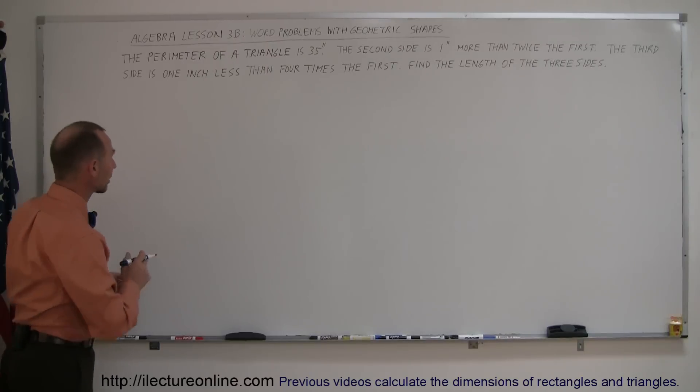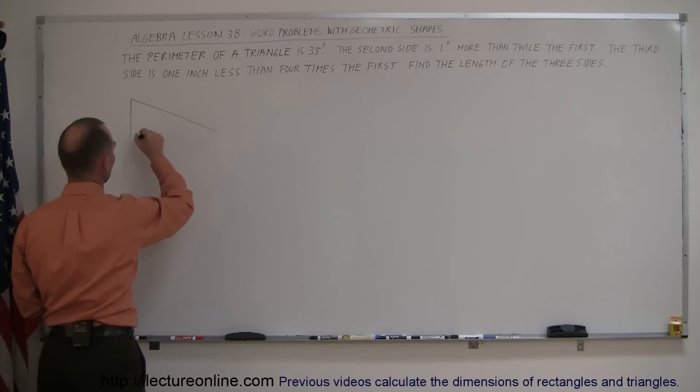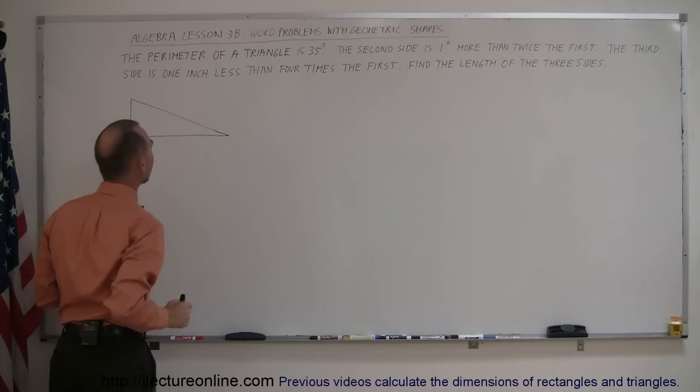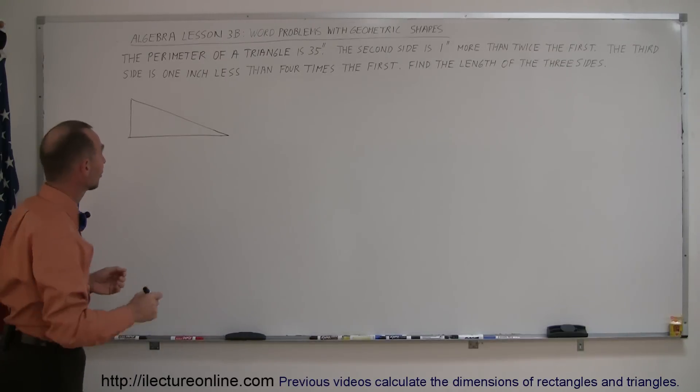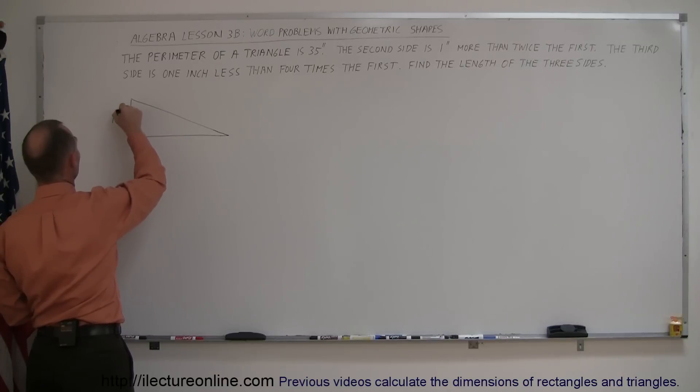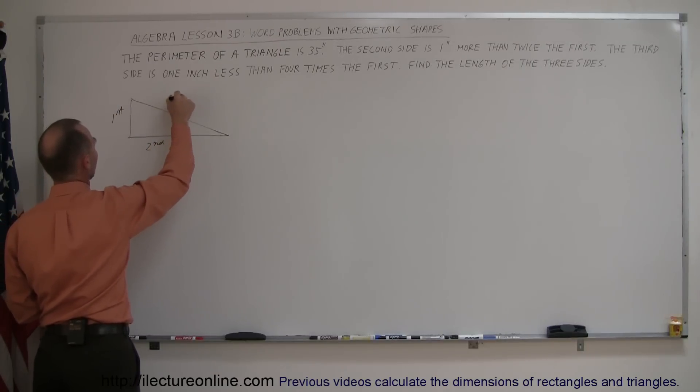We're given a triangle, so let's draw a triangle. It could be any shape triangle like so, and I have three sides. Let's call this the first side, let's call this the second side, and let's call this the third side.